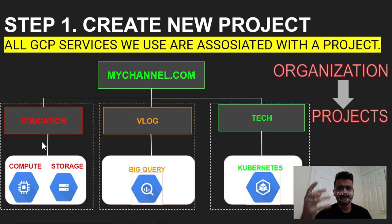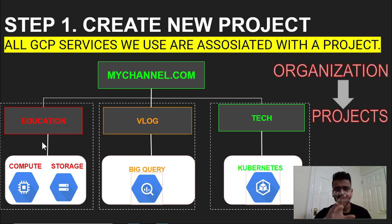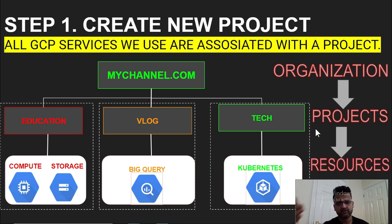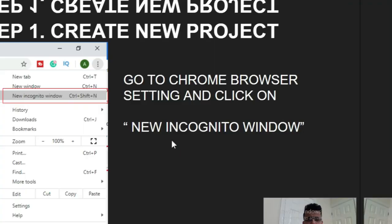Under the education project, for instance, I want compute and storage capabilities. I can install compute resources and storage resources specifically within that project, and then all the billing and security would be managed by that particular project. An organization node can have multiple projects, and under one project you can have multiple resources.